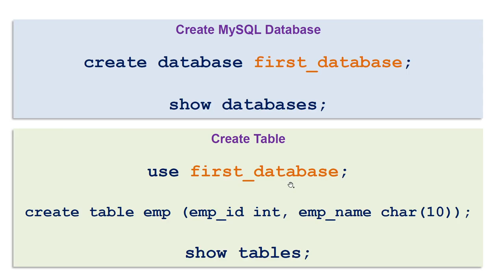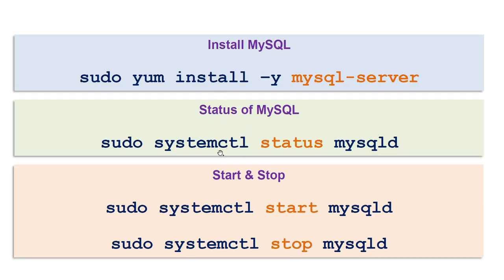To create a database you will use the CREATE DATABASE first_database command — 'first_database' is the name; you can choose whatever name you want. Once created, use the SHOW DATABASES command to verify it exists. Then use USE first_database to connect to it, so all subsequent commands run against that database. We will also create a table called employee_m with two columns, and use SHOW TABLES to verify it was created.